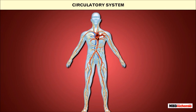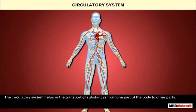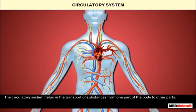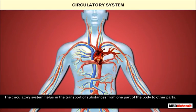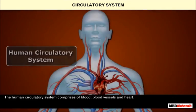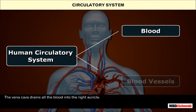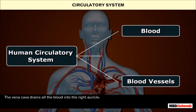The circulatory system helps in the transport of substances from one part of the body to other parts. The human circulatory system comprises blood, blood vessels, and the heart.